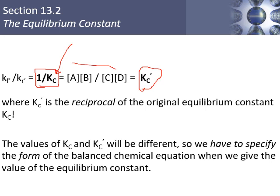You don't have to redo the whole problem — you just take the reciprocal. On the exam I'll sometimes give you a problem to find Kc, then tell you to use the reverse reaction, and you just take one over that value. For example, if A + B → C + D gave Kc = 2, then C + D → A + B would give Kc = 1/2. We have to specify the form of the balanced equation so it's clear which direction we mean.